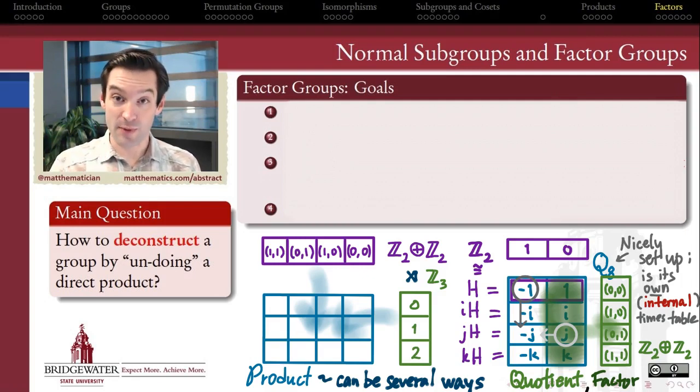So the big question of this week is when do the cosets of a subgroup form a group themselves? Because when they do, that group is going to give us the missing factor in the product that'll then allow us to piece the big group back together from the original subgroup and the new group which we get by the cosets of that subgroup.